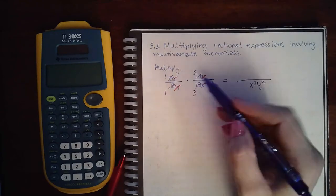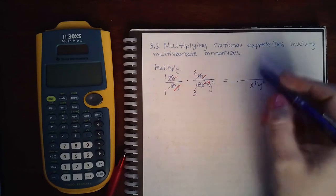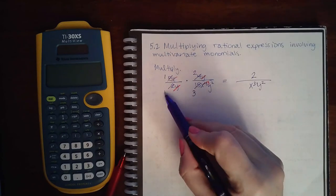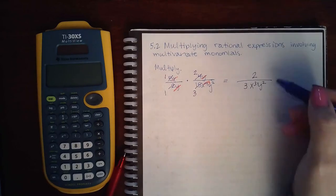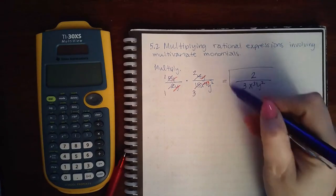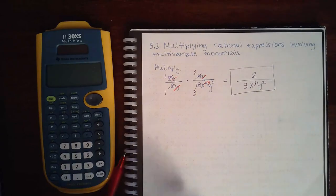So 1, all these are gone, times 2 is 2. 1 times 3, and those guys are already written, I get 3. I cannot simplify this any further. So that is the final answer.